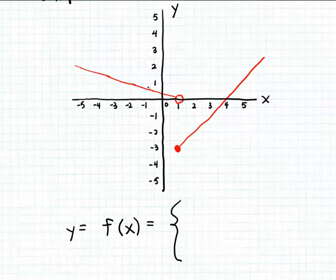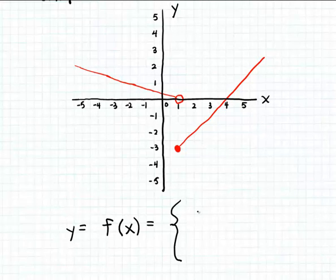The formula that corresponds to the piece of the graph on the left, and then also a formula that corresponds to the piece of the graph on the right, and we're going to have to indicate the domains for those two pieces of the function. Since both pieces are straight lines, both formulas in our piecewise function are going to be linear function formulas. Let's start first with the piece on the left and write down a formula for this line.